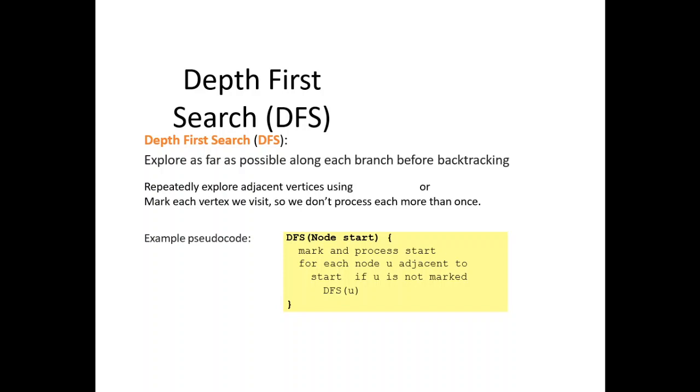Using depth-first search, the DFS. We have to explore as far as possible along each branch before backtracking. Or repeatedly explore the vertices using the mark on each vertex we visit, so we don't process them each more than once. We have an example of pseudocode.